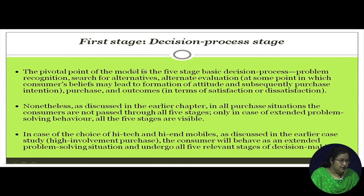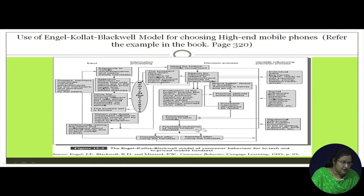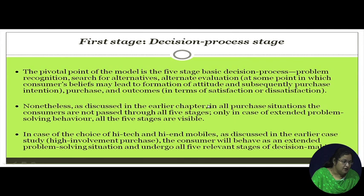The pivotal point of this model is the five-stage decision making process. Taking the example of a mobile phone: first is need recognition, then information search, then evaluation of alternatives, followed by the purchase stage, and finally the post-purchase stage — satisfaction or dissatisfaction — which then forms some perception about the brand. This five-stage process is at the central point of this model.